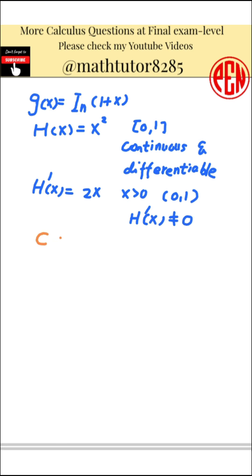By the Cauchy-Mean Value Theorem, there exists some value c between 0 and 1 such that the difference g of 1 minus g of 0 divided by h of 1 minus h of 0 is equal to g prime at c divided by h prime at c.